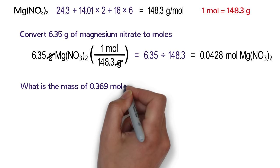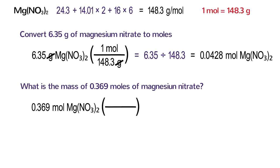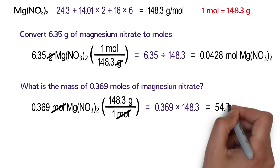What if we wanted to know the mass of 0.369 moles of magnesium nitrate? First, write down the quantity that we know: 0.369 moles of magnesium nitrate. Next, multiply this by a conversion factor fraction using the molar mass as the conversion factor. Because we are starting with moles, put one mole on the bottom. And because we are solving for mass, put 148.3 grams on the top. Moles on the top and bottom cancel each other out. Because the one is on the bottom of the fraction, multiply 0.369 times 148.3, which gives us 54.7 grams of magnesium nitrate.